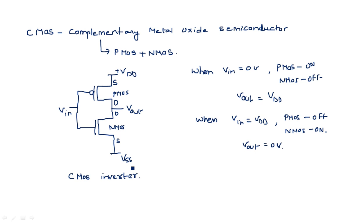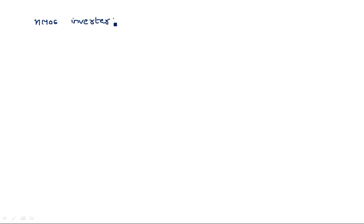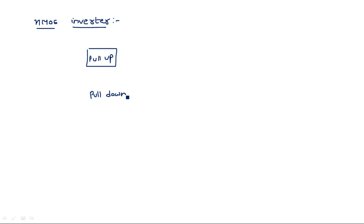Now our concept is the NMOS inverter. In the CMOS inverter one transistor is P-type and another is N-type, but in the NMOS inverter, as the name clearly indicates, both transistors must be of N-type. That means in the pull-up place we should have an NMOS device and in the pull-down place we should also have an NMOS device, with the output taken between the two.